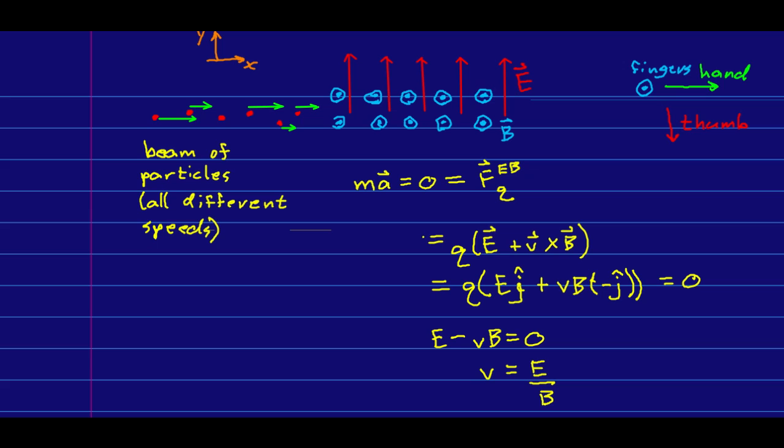Notice something a little surprising. It doesn't depend on the charge of the particles. The charge canceled out at this point. And so even if this is a mix of positive and negatively charged particles, if they are going the right speed, they will still pass through. And so no matter what set of charged particles we have, only the ones going at a particular speed will pass through here undeflected.